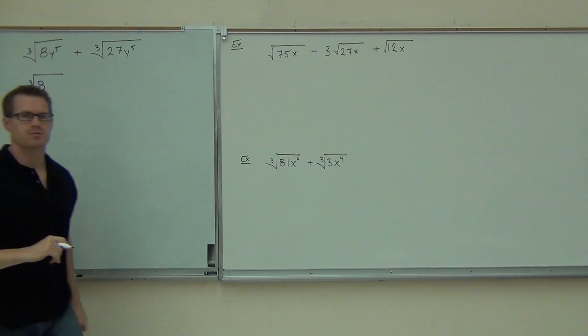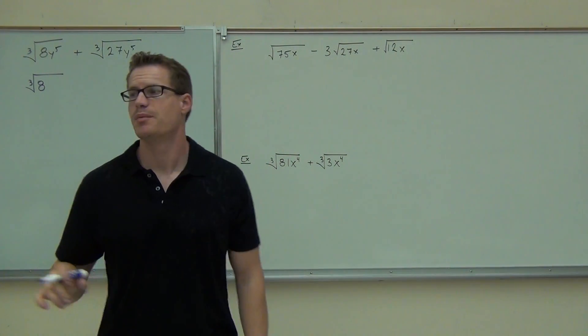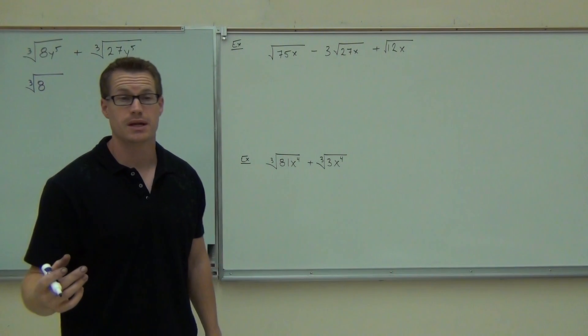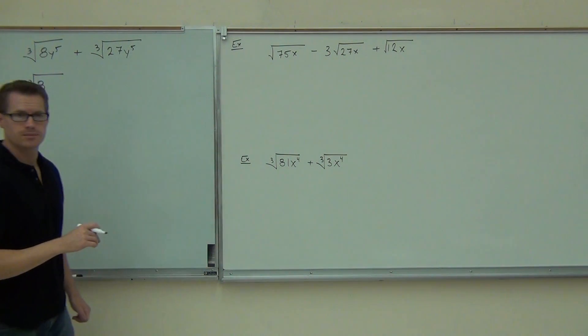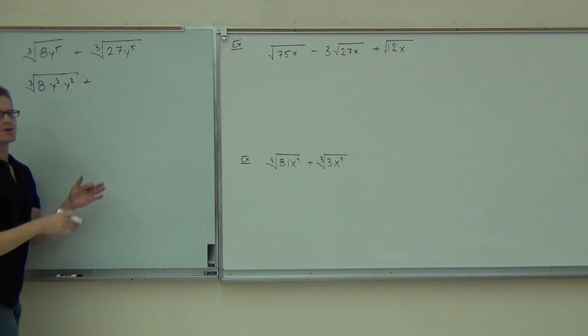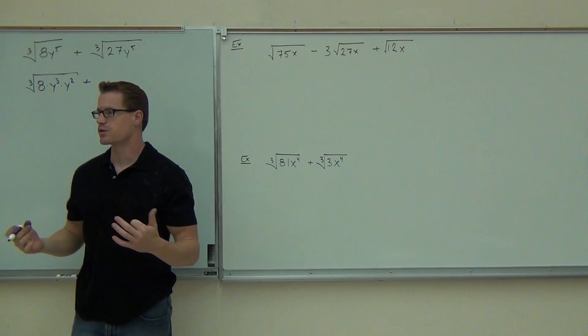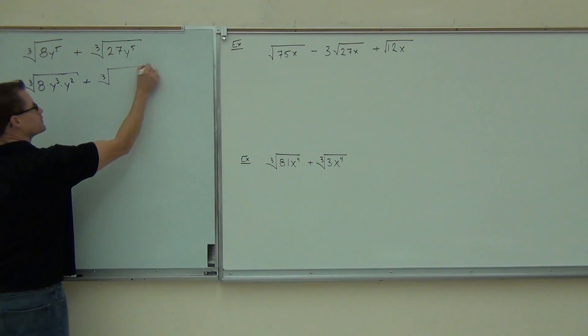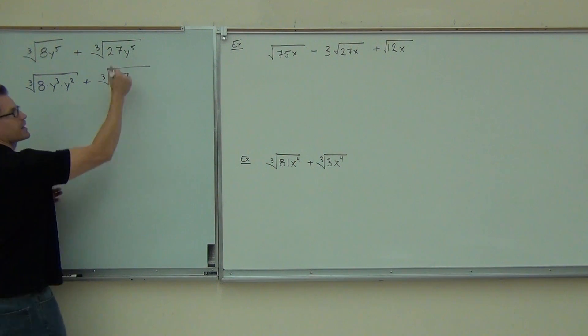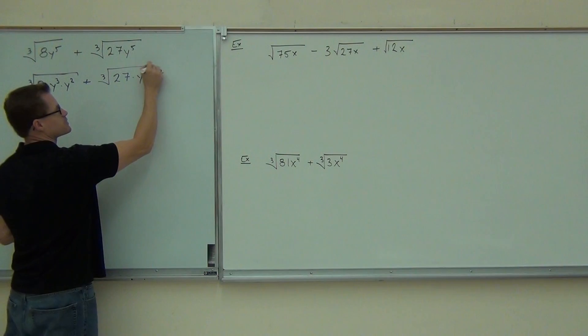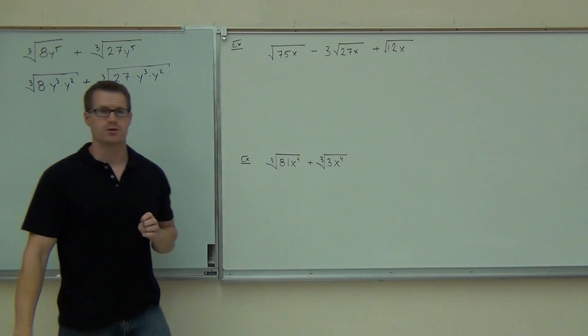However, y to the fifth, the power is bigger than the root. And we know that any time the power is bigger than the root, I can simplify that. How am I going to write y to the fifth so that I can simplify, folks? How many times? Y squared. Perfect. That's exactly right. Same situation over here. 27 is a perfect cube. I know the cube root of that is three. That's great. I don't have to change to 27. However, the y to the fifth, yeah, I need to write that as y cubed times y squared as well. Did you make it that far, folks?